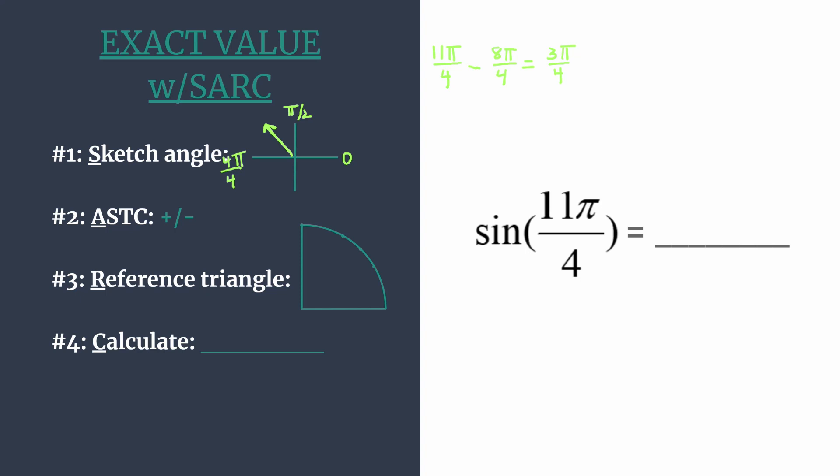Now that we have our terminal side sketched, we can use ASTC—think all students take classes—to decide should our final answer be positive or negative. ASTC simply works its way around from quadrant 1 to quadrant 4 and helps us remember which trig functions are positive in each quadrant. So we start in quadrant 1, all are positive. In quadrant 2, which is the one we care about for this problem, sine and cosecant will be positive. And so we know our final answer for the sine of 11π over 4 will be positive.